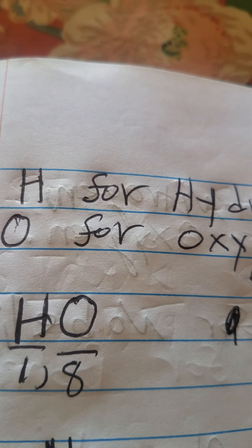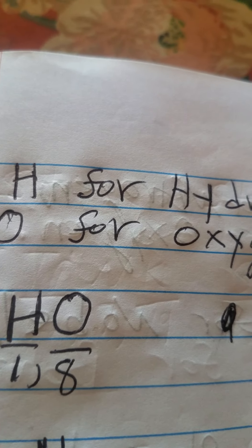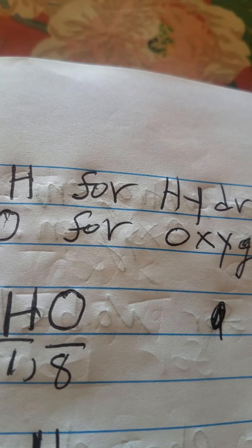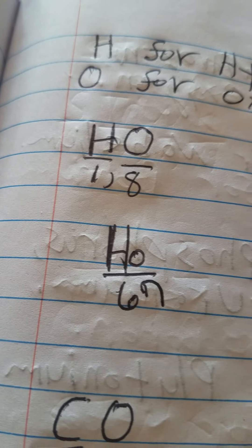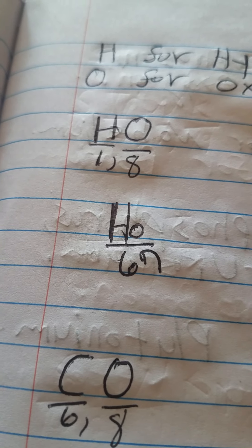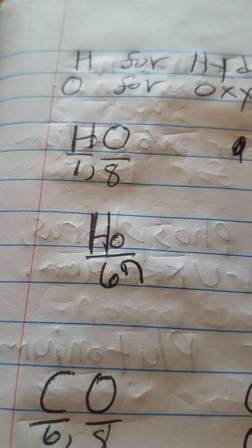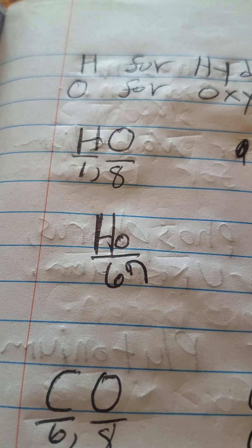But what happens if you have a capital H and a small O? That small O is no longer oxygen, because oxygen would be capitalized. Now the O is part of the H — you have two letters in a chemical symbol. The first letter gets the capital and the second letter gets the small lowercase letter.